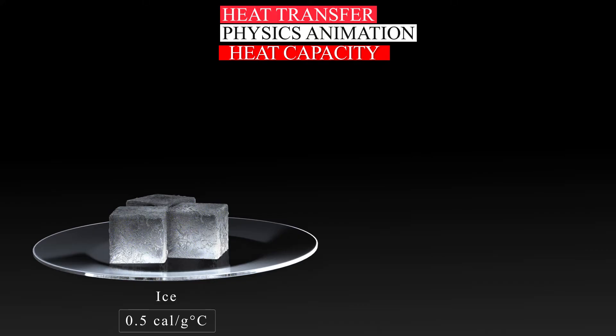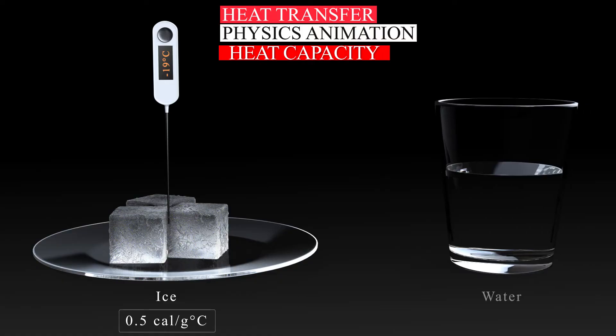This means it takes half a calorie to raise the temperature of 1 gram of ice by 1 degree Celsius. As a liquid, water's heat capacity is 1 calorie per gram for every 1 degree Celsius.